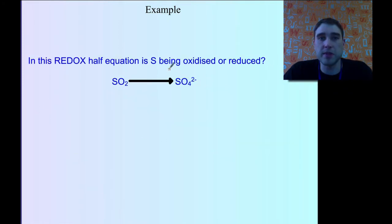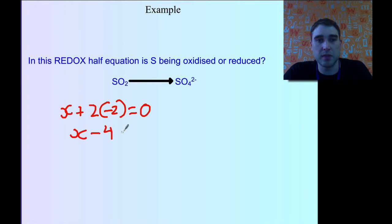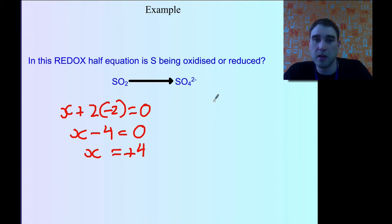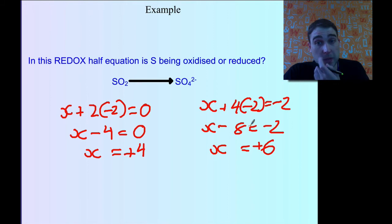For one final example, we'll look at sulfur — sulfur dioxide going to the sulfate ion. Is it being oxidized or reduced? For SO₂: X plus 2 times minus 2 equals 0 (no charge), so X minus 4 equals 0, giving X equals plus 4. For SO₄²⁻: X plus 4 times minus 2 equals minus 2, so X minus 8 equals minus 2, giving X equals plus 6.